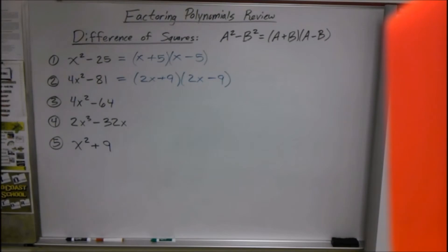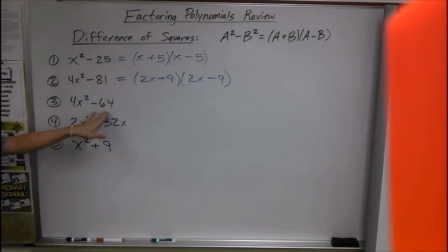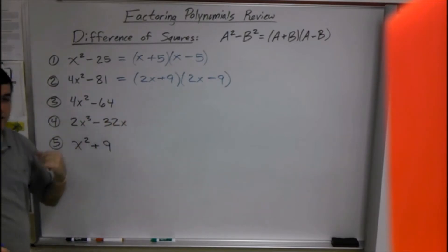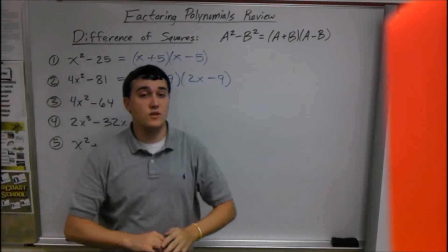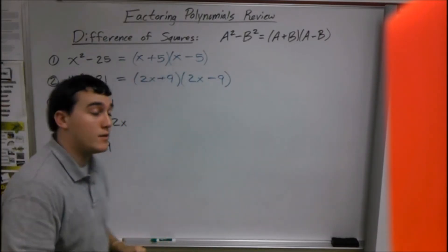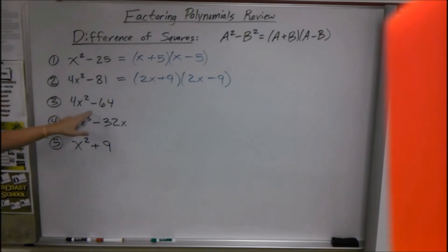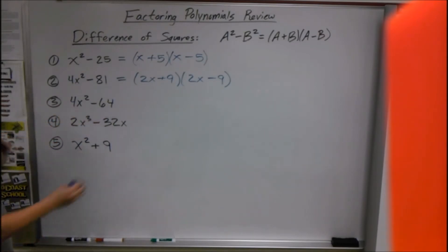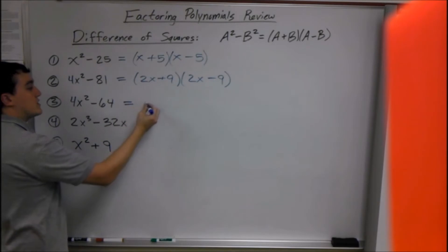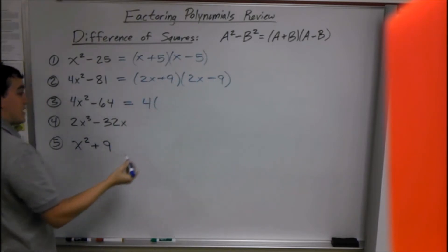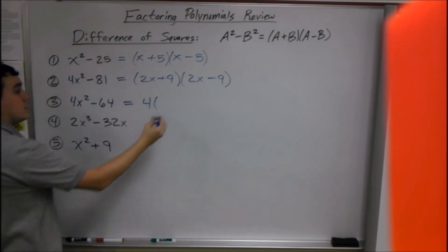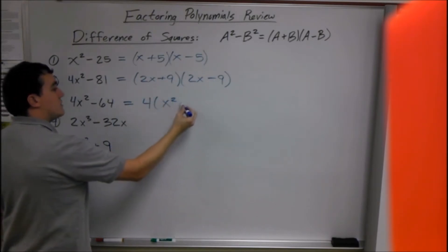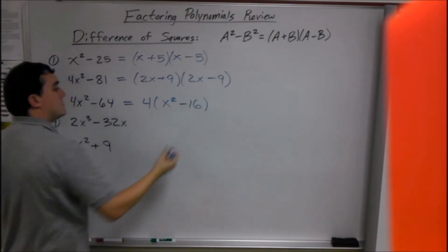But it's not always going to be that easy, because sometimes you can factor it the same way but you can take stuff out first. The first thing you want to check for is if it has a greatest common factor. Do they have anything in common? Yes — they're both divisible by 4, so we take out a 4, and if you take out a 4, we have x² minus 16 left.